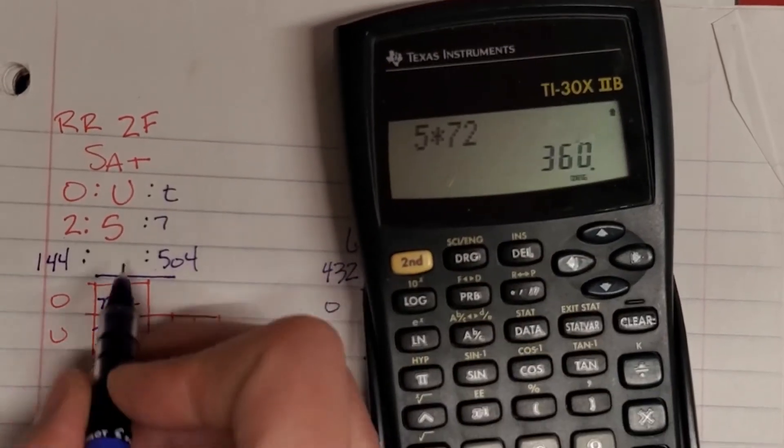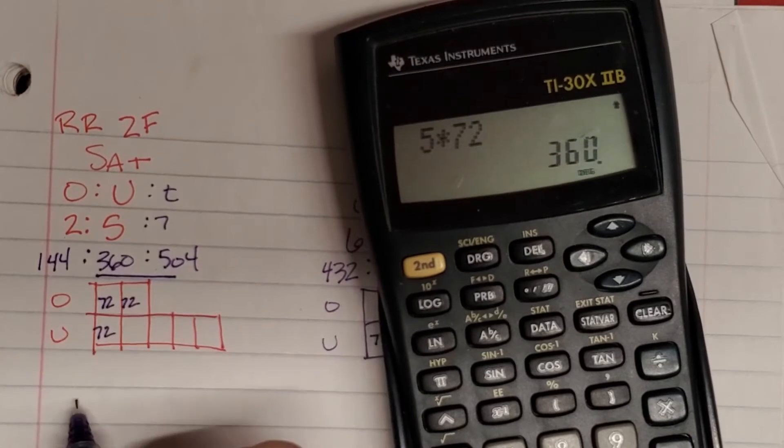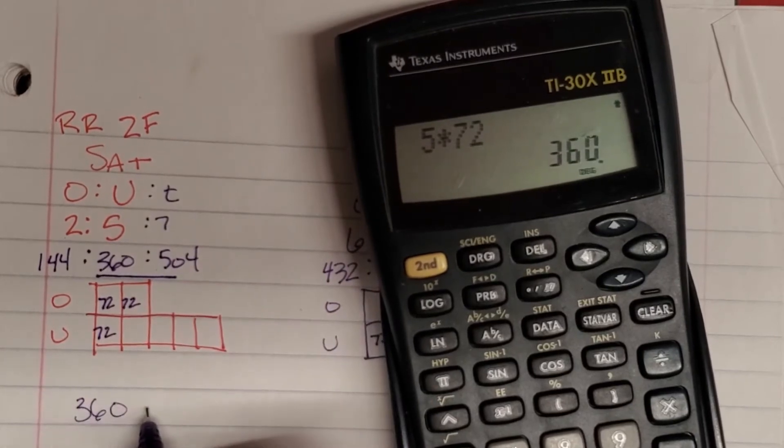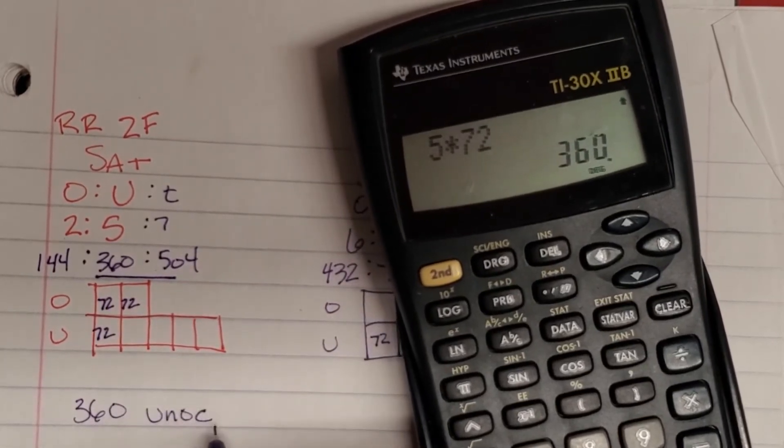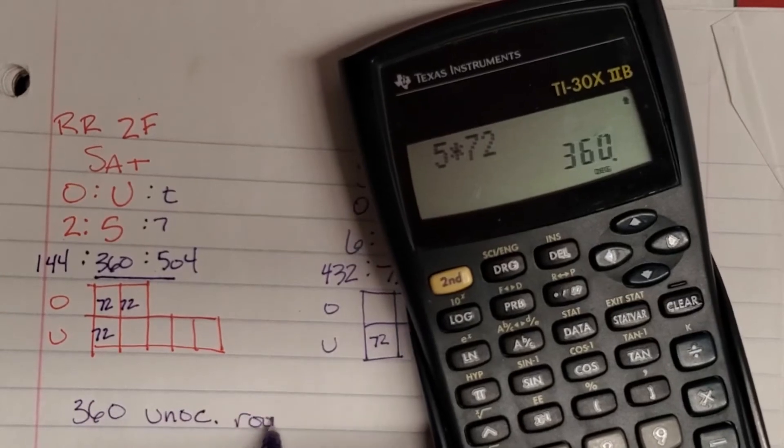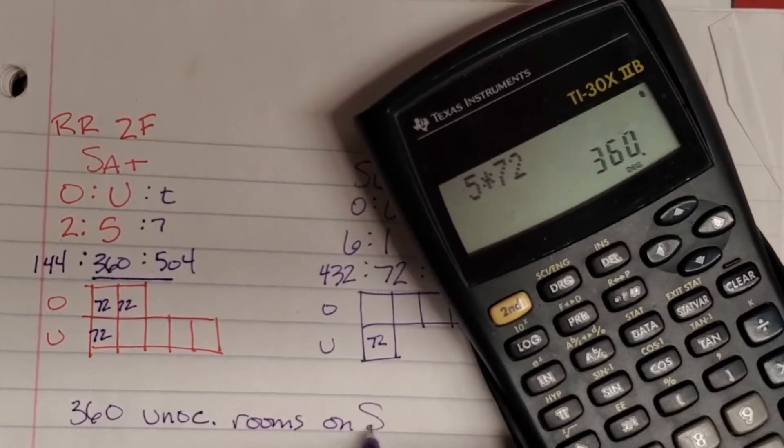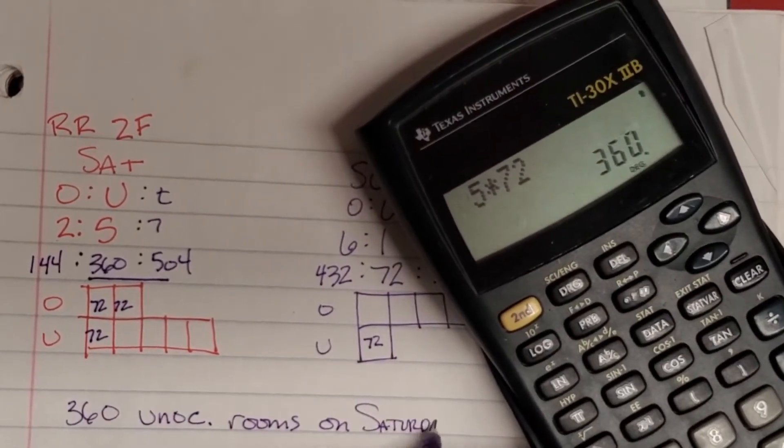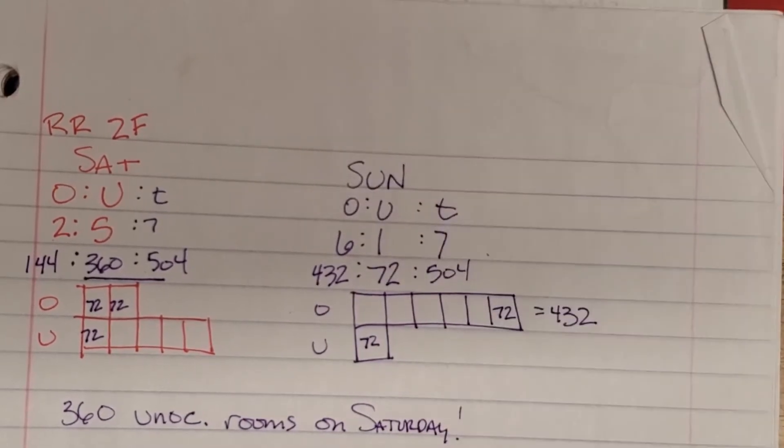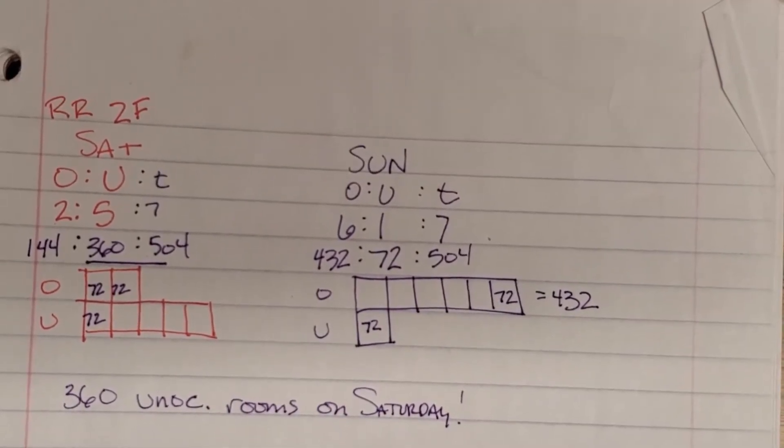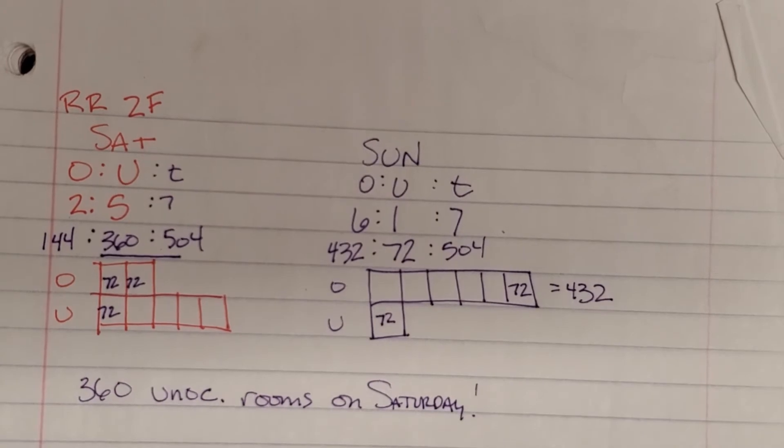That's 360. So there are 360 unoccupied rooms on Saturday. Okay. Awesome.